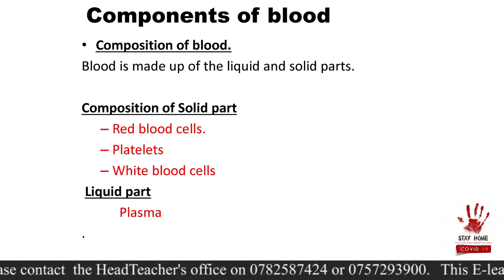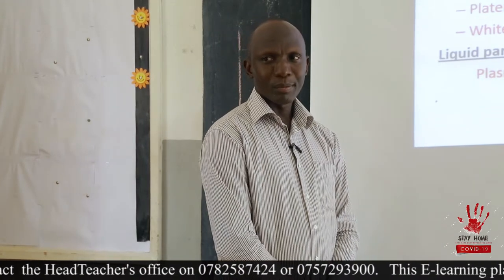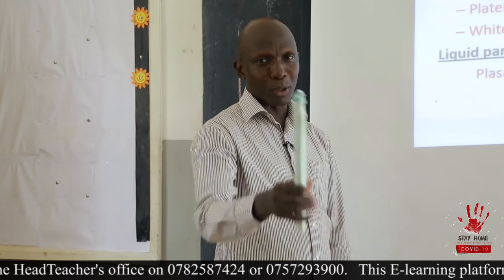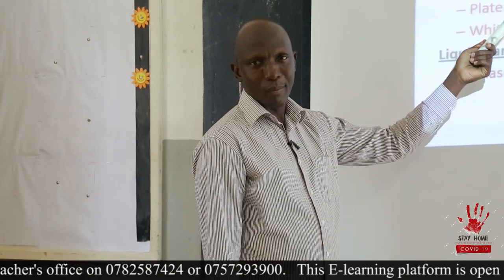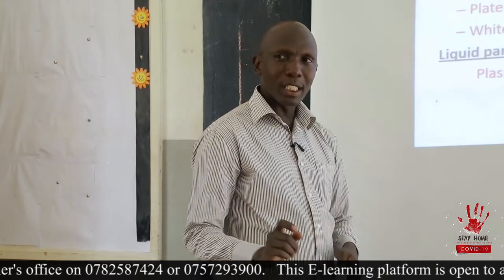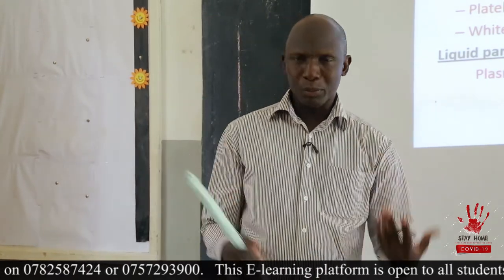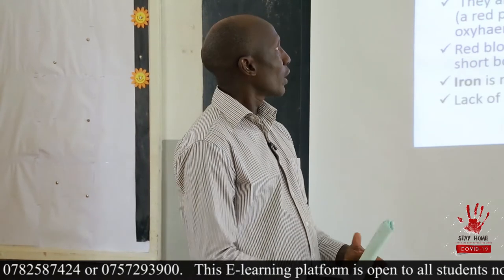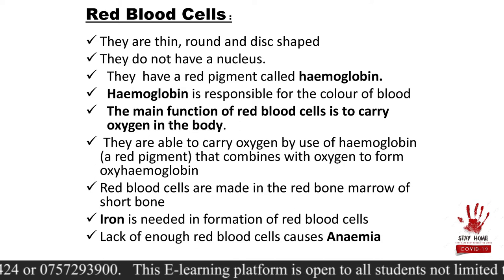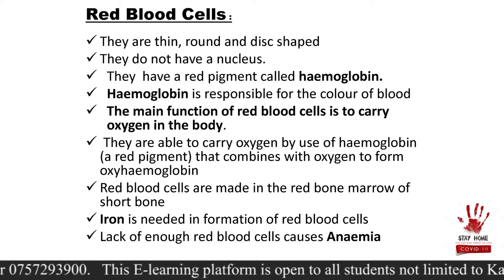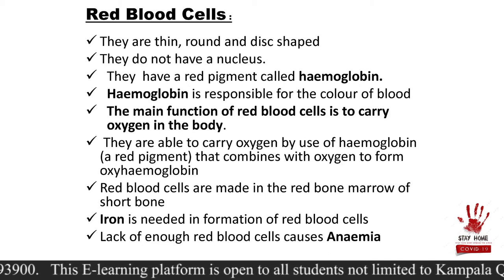Can you tell me the difference between the red blood cells and plasma? The red blood cells, platelets, and white blood cells are all in the solid form, while plasma is the only liquid form of blood. So we want to find out what each of those components looks like. Let's start with the red blood cells. These red blood cells have got characteristics. They are very thin and round — they are like a disc.